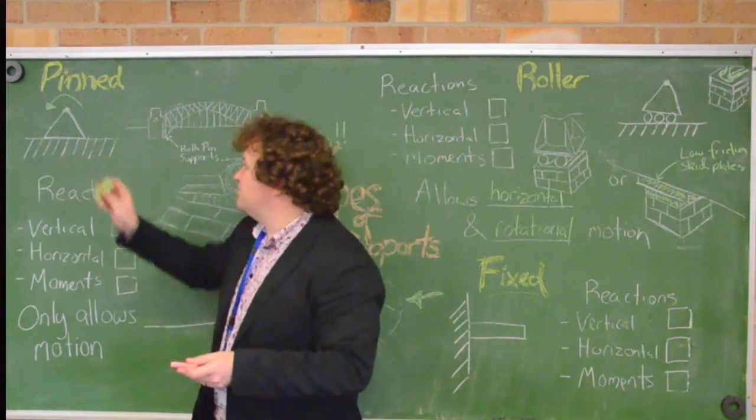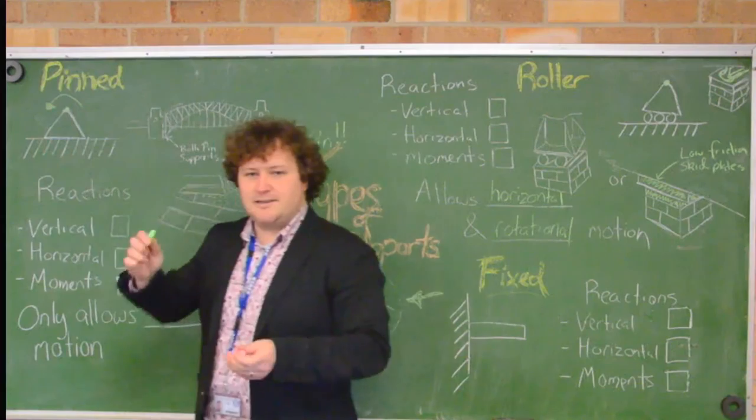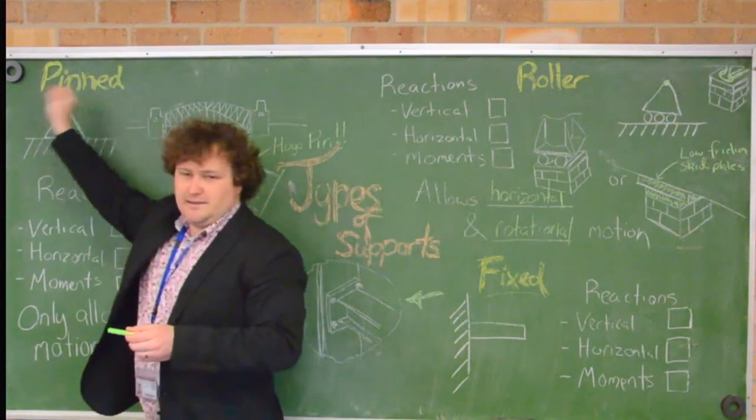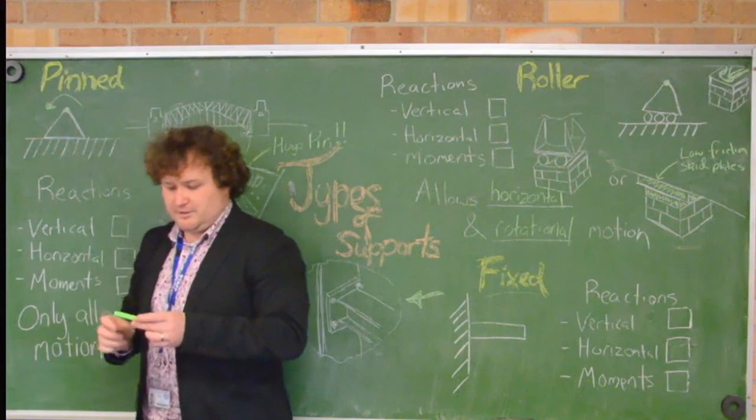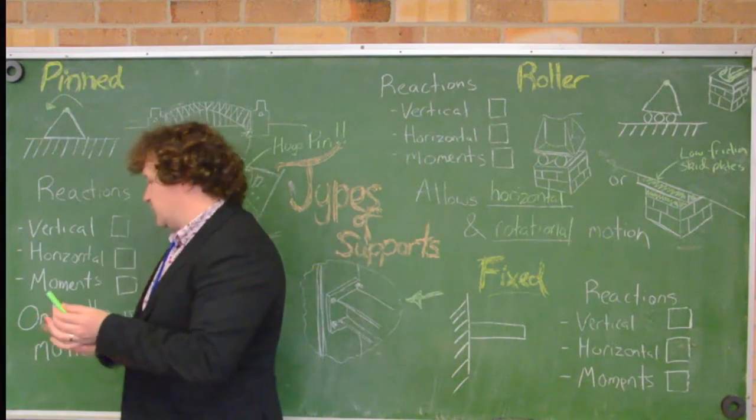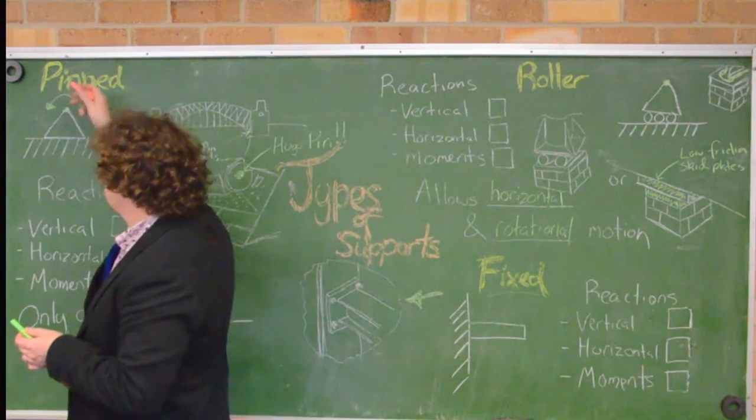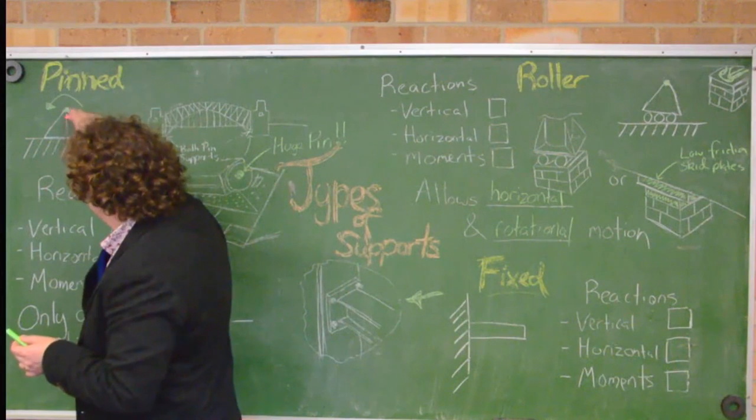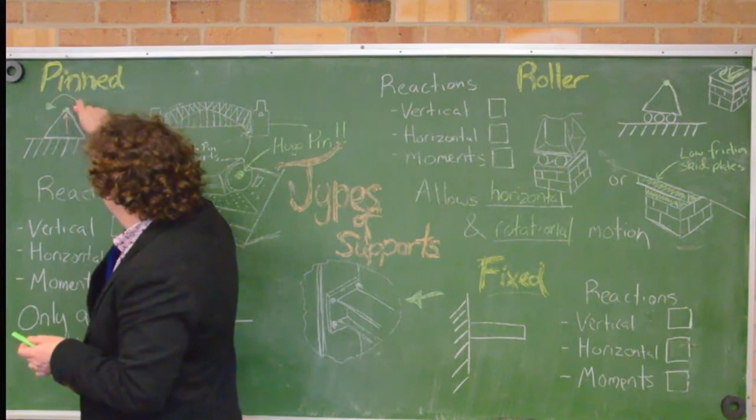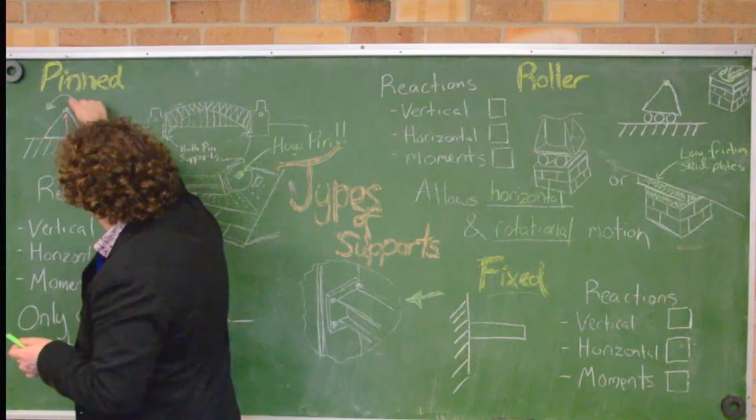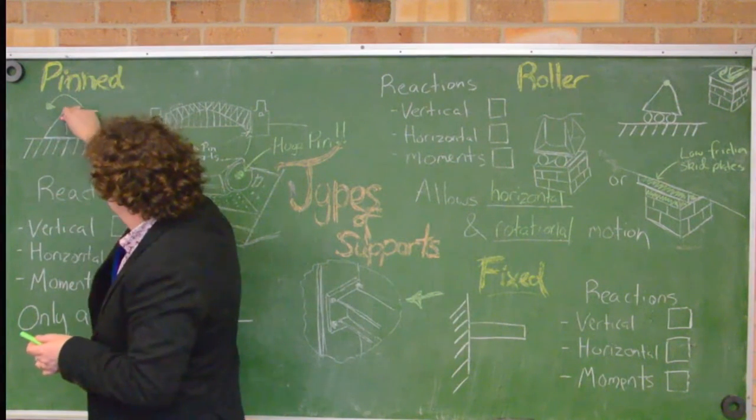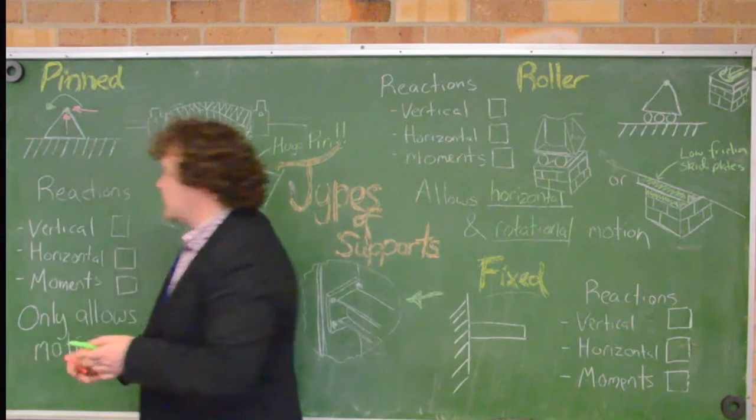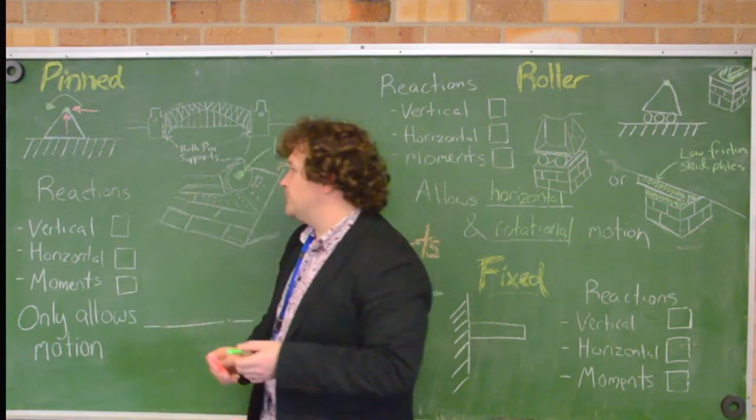So I've put it in green to show that it allows rotation around that pin. But the bolt or pin is going to be stopping things from moving left or right, horizontal movement, or up or down, which is vertical movement. So I'm going to draw those in red to symbolize them stopping. So there's going to be no vertical movement and no horizontal movement occurring because of that bolt going through it or that pin.